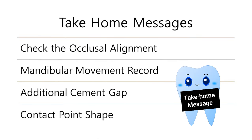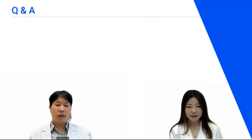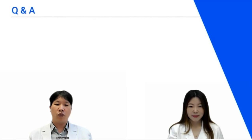Let's summarize today's lesson. Designing a zirconia crown starts with checking for any errors made during scanning. If there is a problem with occlusal alignment, it can be corrected to some extent by software, though not completely. Mandibular movement records produce more meaningful results than articulators. Giving the line angle an additional cement gap results in a uniform and thin cement gap. The contact point design should not be concave, and if adjacent teeth are not flat, the dental technician should communicate with the dentist to create the crown. Thank you for sharing all your tips, Dr. Kim.